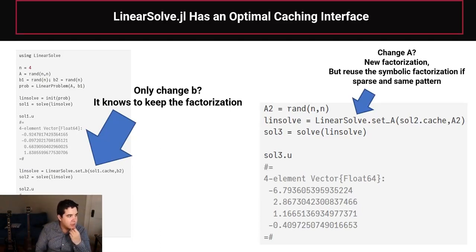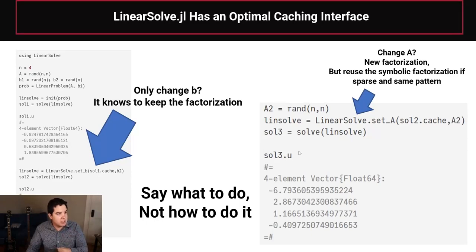One other detail in here is that LinearSolve.jl has a caching interface. So when you do a solve and you say, hey, I want to—here I can init a solve and I can solve once with this cache, but then I say now change B and solve again. And what this will do is it'll say, hey, for this method, the optimal thing to do is to keep the factorization. So I will keep the factorization and resolve, just re-backsolve. And now, if I change A, it can recognize like, hey, if this was a sparse matrix, then I should keep the symbolic factorization if the sparsity patterns are the same. Basically it's saying, tell me what to do, but not how to do it. Tell me that you want to change B, tell me that you want to change A, and I will know from the algorithm how to most effectively do that and get all the optimality out. I don't think that most users have to know the details about what it's actually doing here to really understand that, yes, you want to be doing these optimizations.